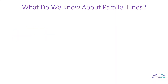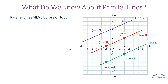What do we know about parallel lines? Hopefully we remember parallel lines never cross or touch. Given these three parallel lines graphed on the coordinate plane — line A, line B, and line C — each with two points identified, let's see what we can figure out about the relationship between these.